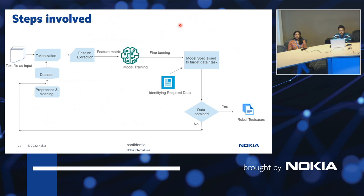This is the sample flow where the user has a text file as input and gets a robot test case as output. The first process is tokenization: the larger chunks of unstructured natural language text are converted into discrete elements. For example, a text data string can be converted into numerical representation easily understood by machine learning. Then we have feature extraction, where additional weights are assigned to the numbered output received by the system.